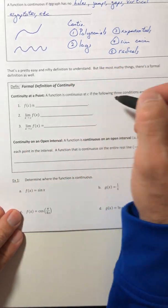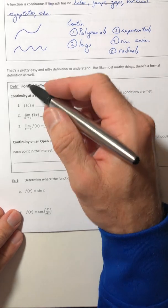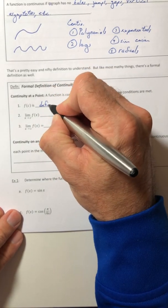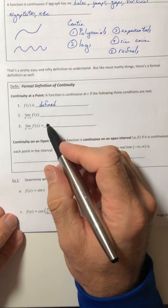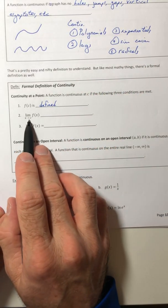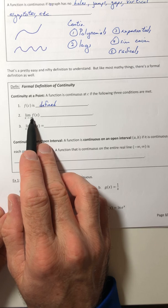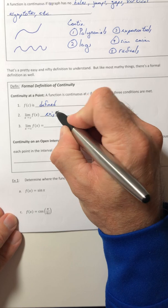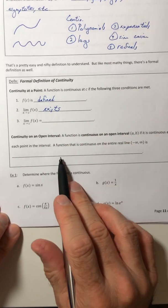f of C, so you take that C value, plug it in the function, that has to be defined. You have to actually get an answer. Number two, if you take the limit of f of x as x approaches C, that limit has to exist.